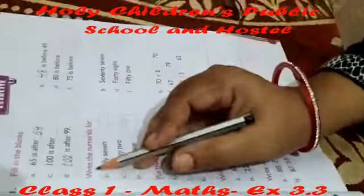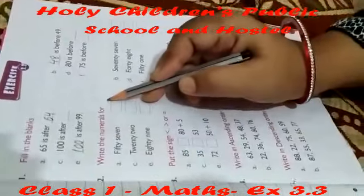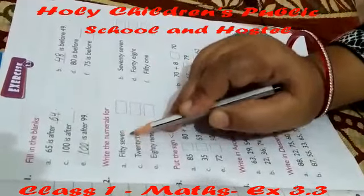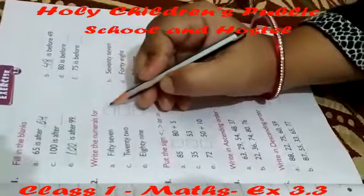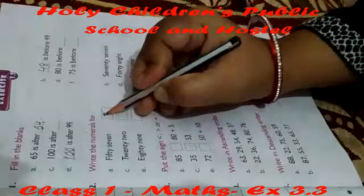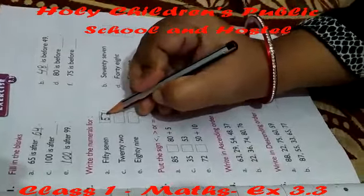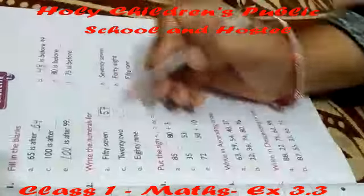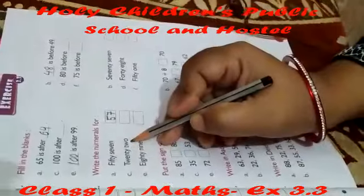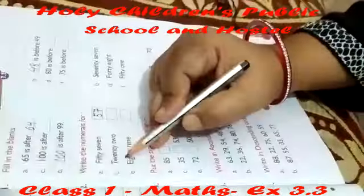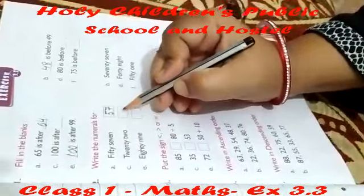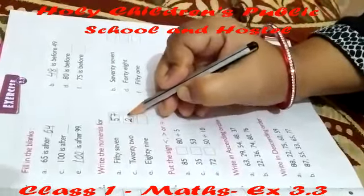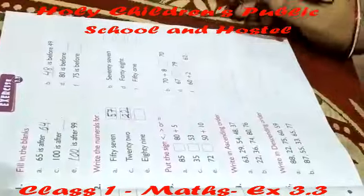Question number 2 is write the numerals. Here number names are given — fifty-seven. What is the numeral of 57? We can write here 57. Next, twenty-two. The number name is given as twenty-two. We can write here 22.